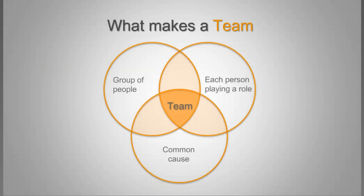Moving into the next bit — before I do a poll — I just wanted to cover what makes a team. Before we understand how to make a team fantastic and turn it into a high-performance team, let's be clear about what we're dealing with. There are three elements for it to even be considered a team in the first place. The first is that we need to have a group of people — it's got to be more than one. One person can't be a team, but once we have more than one, we're underway.